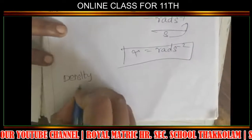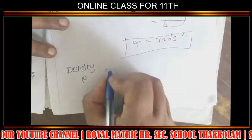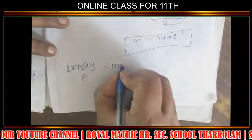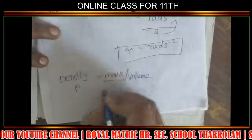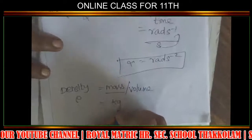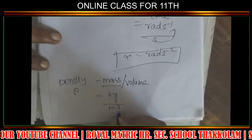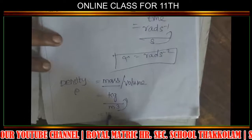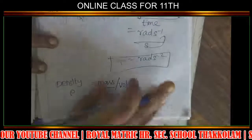Density, symbol rho (ρ), formula is mass divided by volume. Mass is in kilogram and volume is in meter cubed, so density SI unit is kg m⁻³.